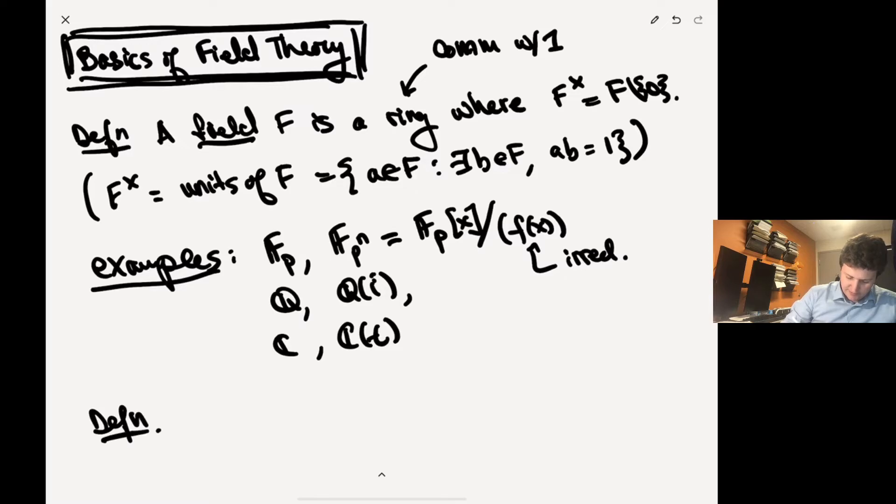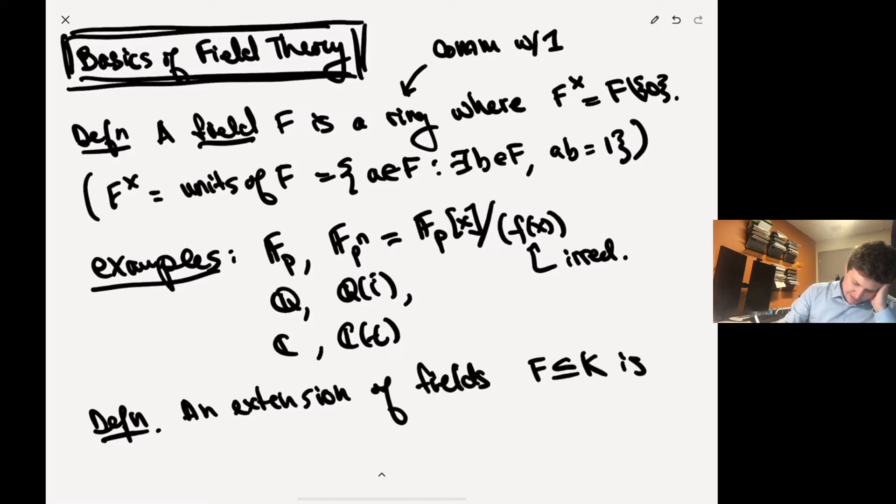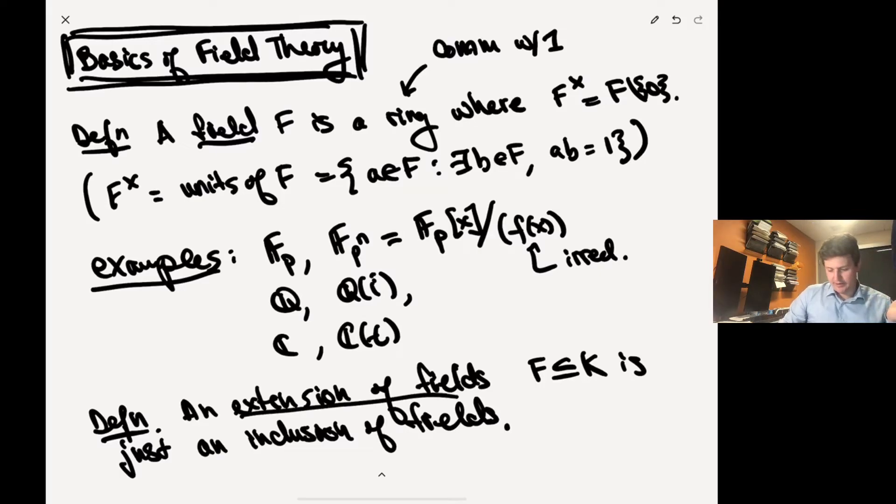Okay, so an extension of fields. So let me just give a definition now. Definition: an extension of fields, let's say F is a subset of K, is just inclusion of fields. Okay, so that's all I mean by a field extension. So we say that K is an extension of F. This is the terminology that we use.